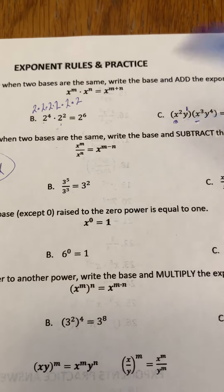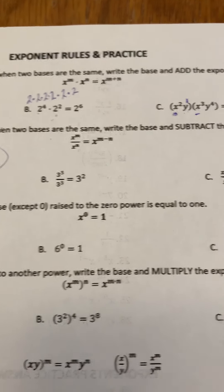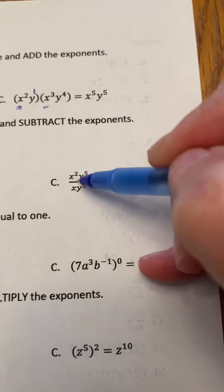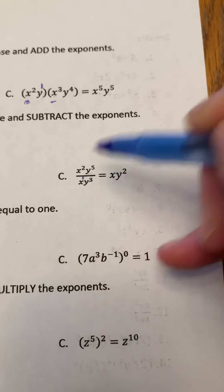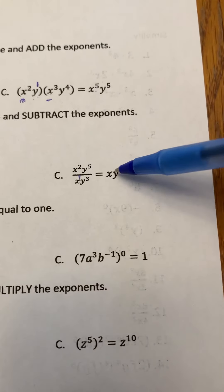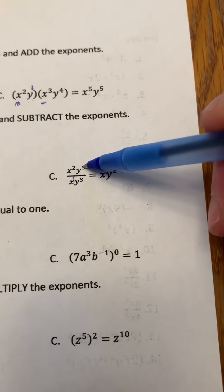3 to the exponent 5 divided by 3 cubed—we would subtract the exponents and get 3 squared. Here's where we moved into the polynomial unit. Another great example of an invisible 1: x squared divided by x is simply x, and y to the power of 5 divided by y cubed would be y squared.